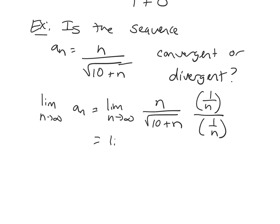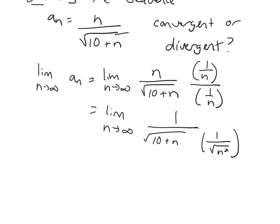So it's easy for me to simplify the numerator now. I'm just going to get 1. The denominator is a little bit harder because one of the terms is under a square root and one of them is not. So before you can simplify the denominator, think about this as being 1 over the square root of n squared. Do we agree that that's the same thing as 1 over n? And now that they're both under square roots I can multiply them and combine them together. So I'm looking at the limit of 1 over the square root 10 plus n times 1 over n squared.